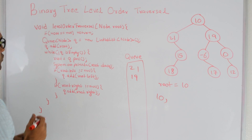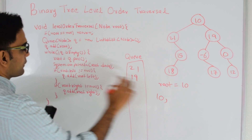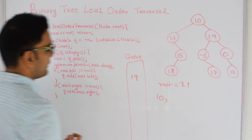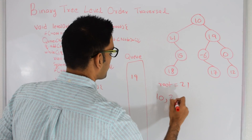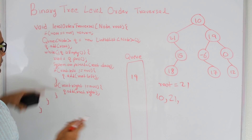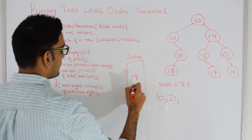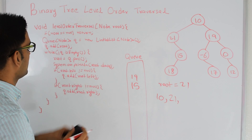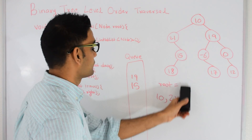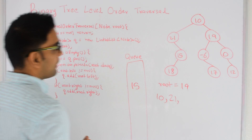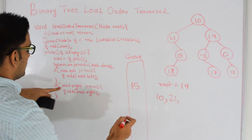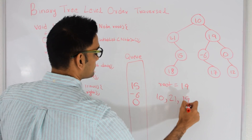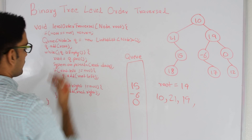We again go to the top of the while loop. Queue is not empty, so we pull — root becomes 21. We print out 21. 21 doesn't have a left child so it doesn't enter that if condition. 21 does have a right child which is 15, so that gets added. Then again queue is not empty, so root becomes 19, we remove it from the queue. 19 has a left child so we add -6 to the queue. 19 also has a right child so we add that. We print 19 and go back to the top of the while loop.